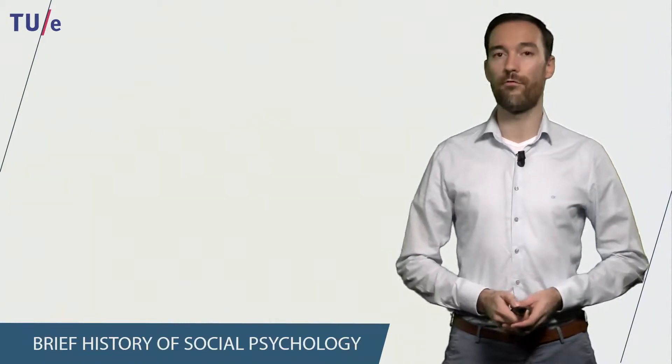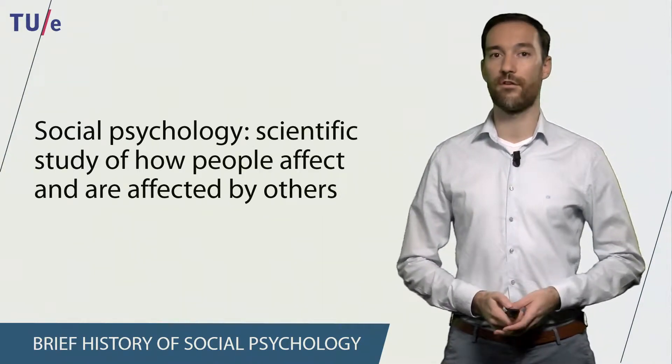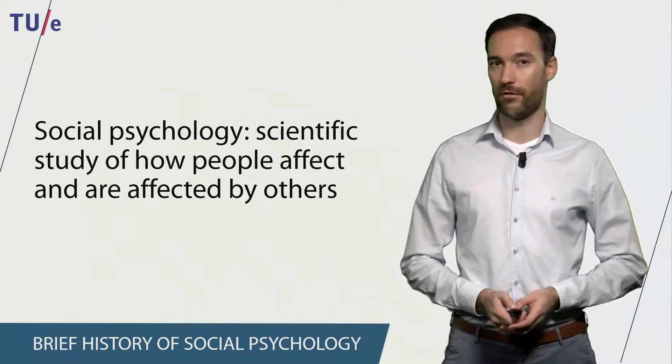Let's start with a definition of social psychology. Social psychology can be defined as a scientific study of how people affect and are affected by others.